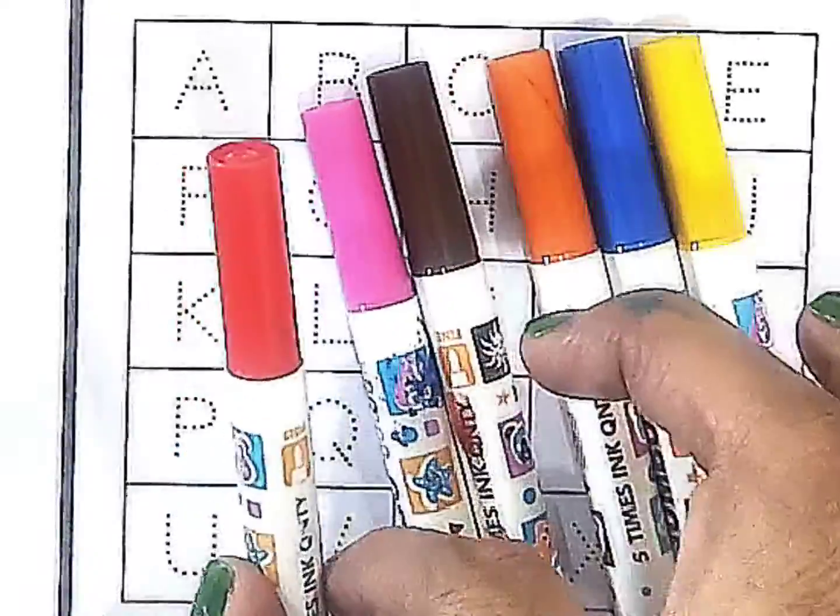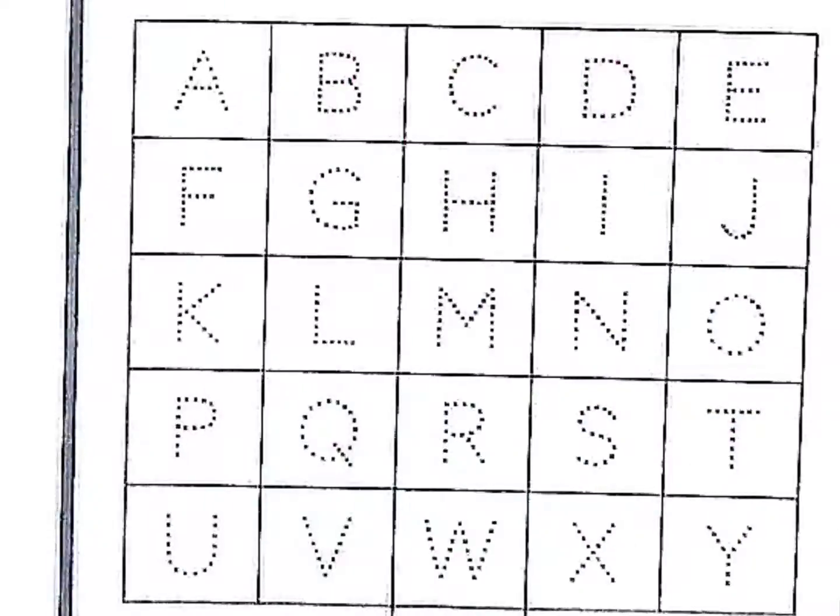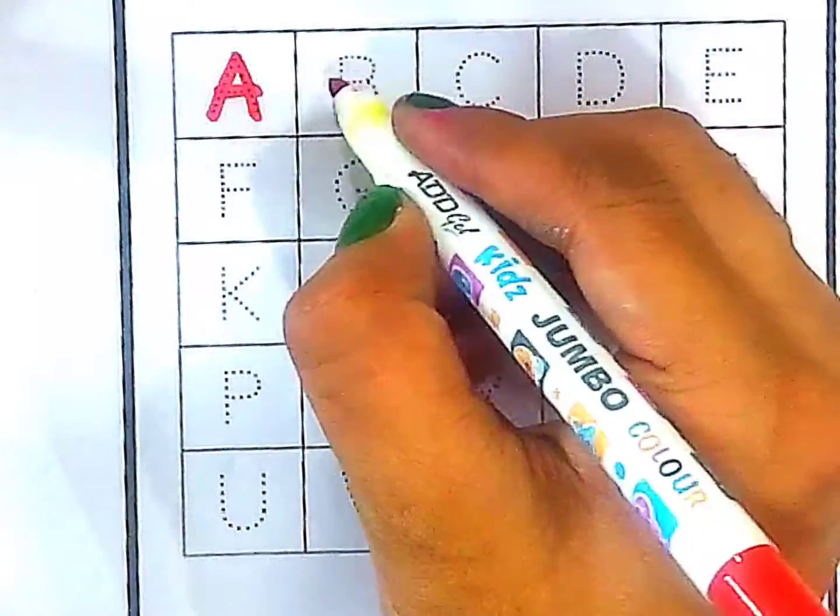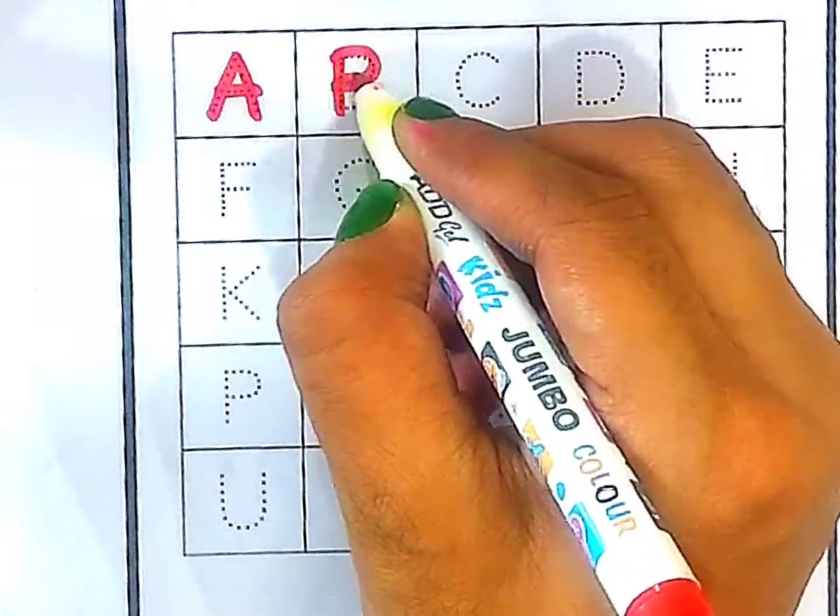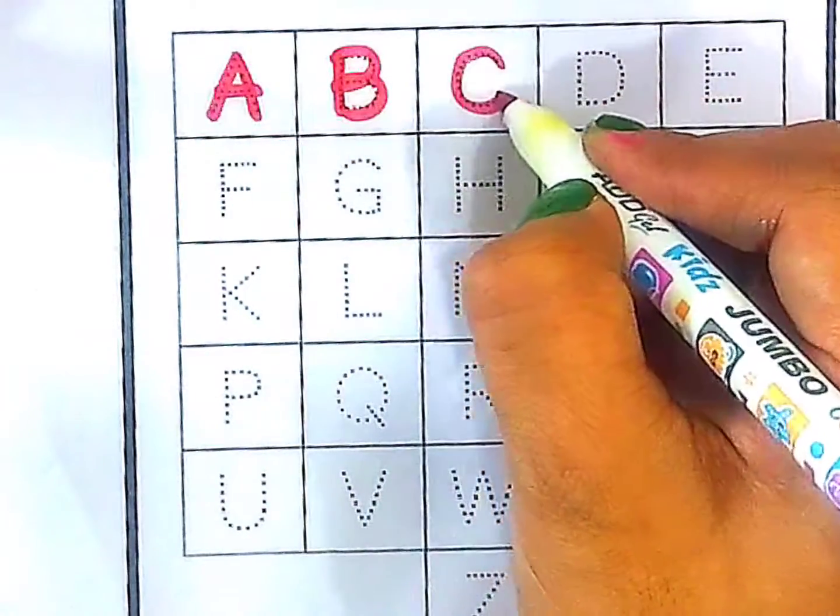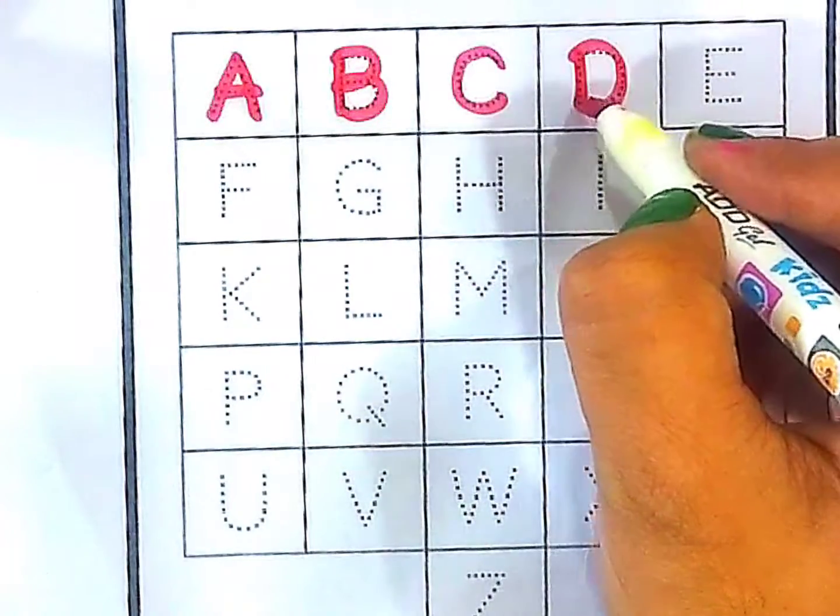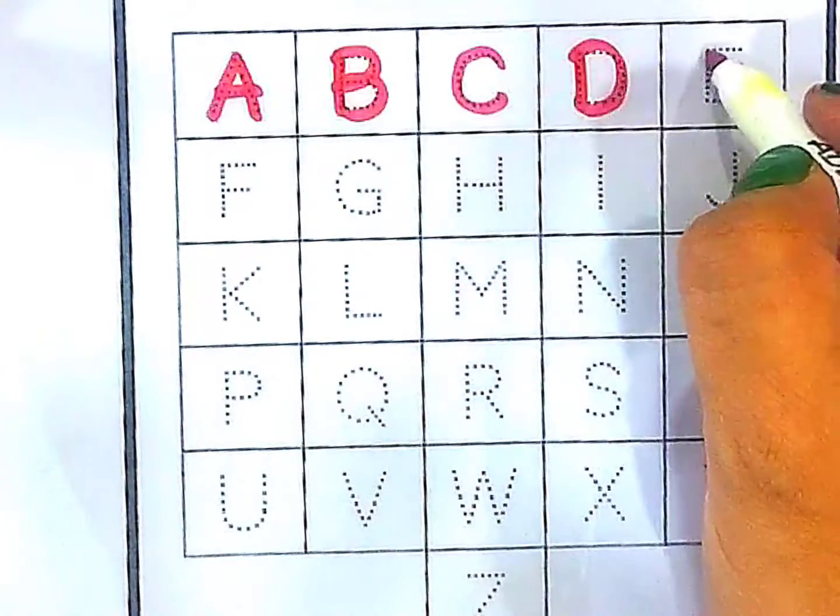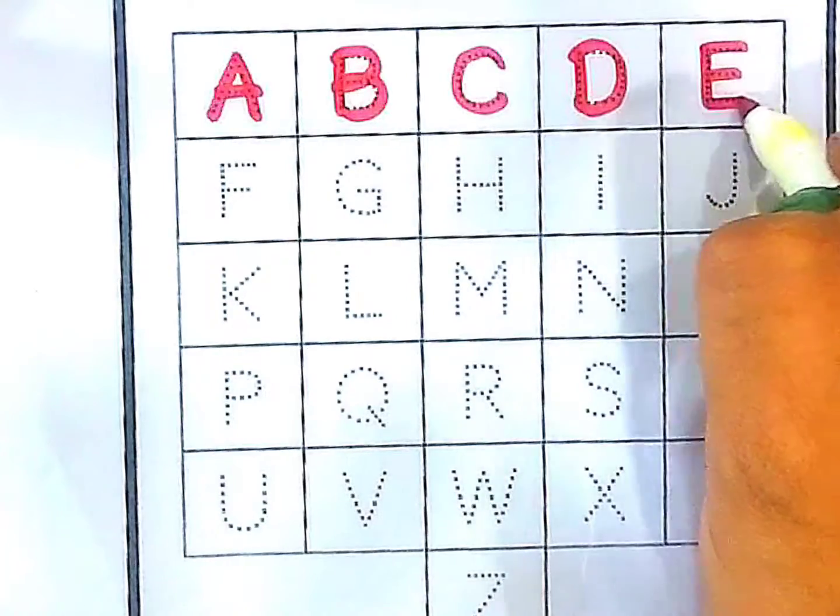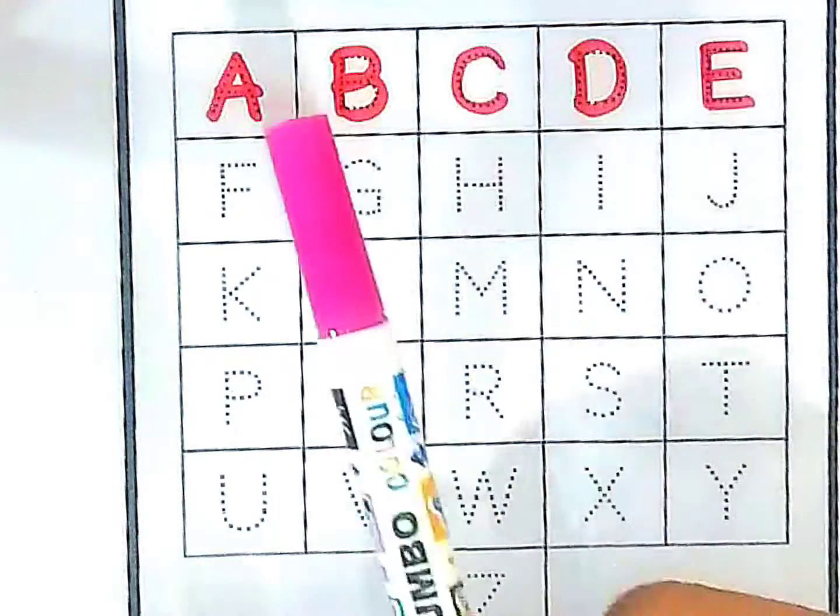Red color, red color. A, A for apple. B, B for ball. C, C for cat. D, D for dog. E, E for elephant.